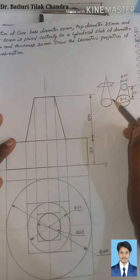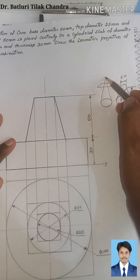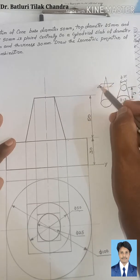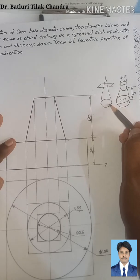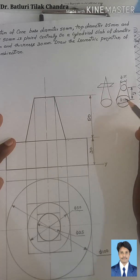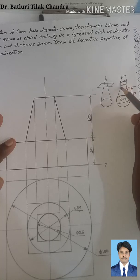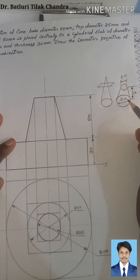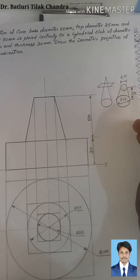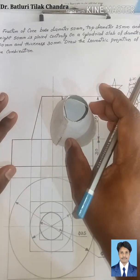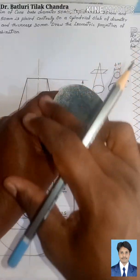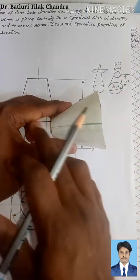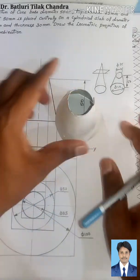A frustum of a cone is nothing but the cone cut from the apex to a required distance using a cutting plane cut horizontally at the top, parallel to the bottom surface. At the top the circle diameter is 25 mm, at the bottom diameter is 50 mm, and the overall height is 50 mm. This is called a frustum of a cone.